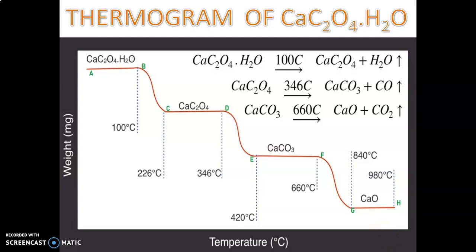This is the thermogram of calcium oxalate. Now we consider the application of this thermogram. Suppose we are using CaCO3 as a supporting component in a catalyst — it should not undergo any chemical change. There are two experiments: one carried out at 300°C and another at 1000°C. Can we use CaCO3 in both cases? In the first case at 300°C, calcium carbonate is stable since it only becomes unstable from 660°C onwards.